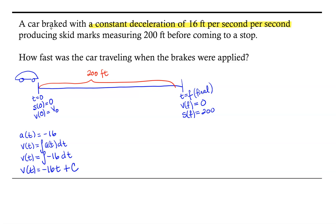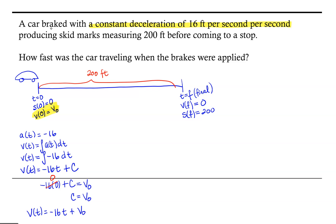Our velocity function is negative 16t plus a constant of integration. We have information to find that constant: we know the velocity at time zero is some initial velocity v naught. Evaluating: negative 16 times zero plus c equals v naught. Negative 16 times zero is zero, so c equals v naught. Our velocity function is simply negative 16t plus this unknown initial velocity v naught.